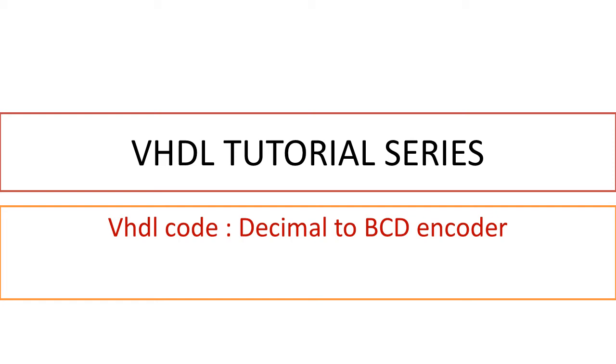In this segment we will discuss about how to write VHDL code using data flow style of modeling for an encoder. In case of encoder we will specifically discuss about a decimal to BCD encoder.